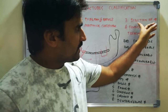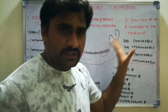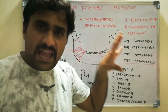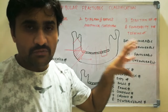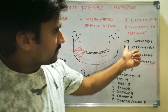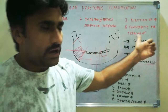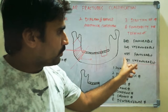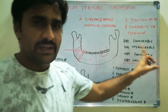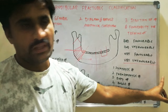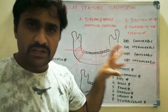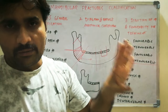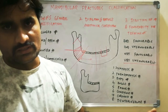Based on the direction of the fracture line and favorability for treatment — this classification is especially for angle fractures — it is divided into: horizontally favorable, horizontally unfavorable, vertically favorable, and vertically unfavorable. This classification will be discussed in detail under mandibular angle fractures.